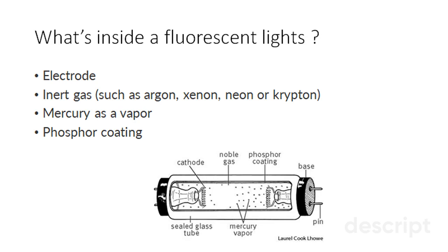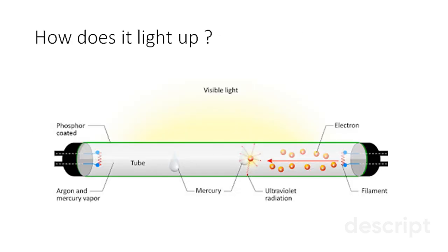Electricity first enters the light fixture, like a troffer, and through a ballast. The ballast regulates voltage, current, etc., and is necessary for a fluorescent bulb to light.